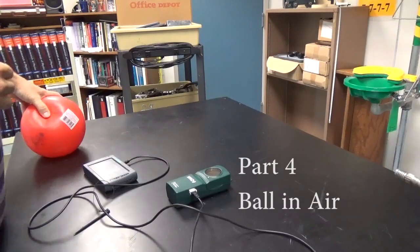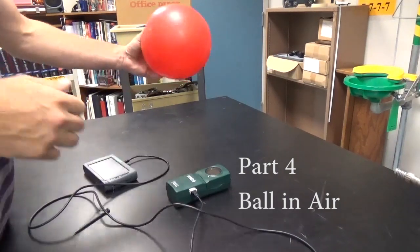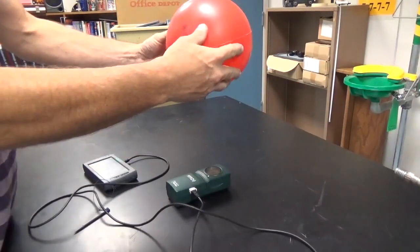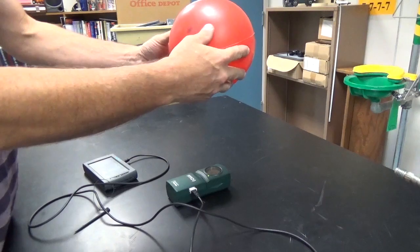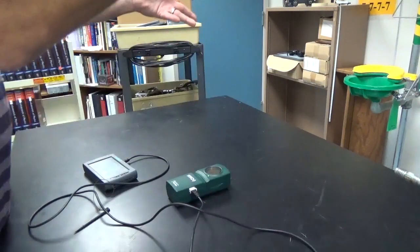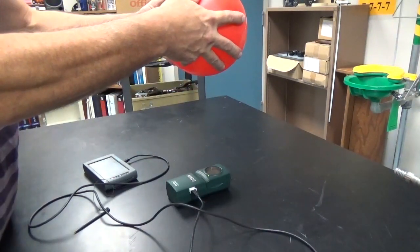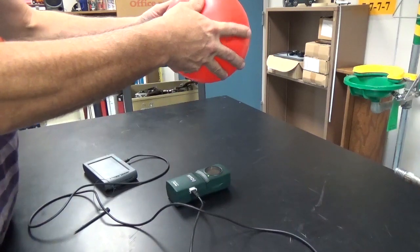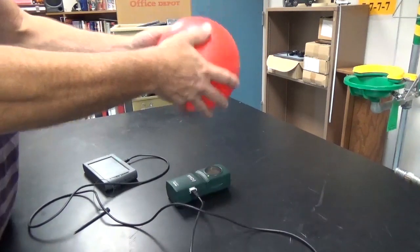This is the ball in the air experiment. You're going to set the ball over the top of the motion detector, and you'll probably have to practice a few times throwing it straight up and catching it right over the motion detector. Once you think you can do that pretty well.